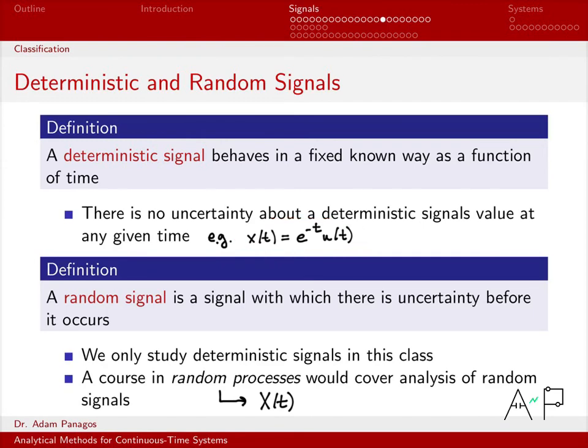Deterministic signals I can just write down exactly what they're equal to. So fairly straightforward definition, and for this class in particular, if you're asked is this signal random or deterministic, as long as it has this lowercase notation and you've got an equation, you know it's a deterministic signal.